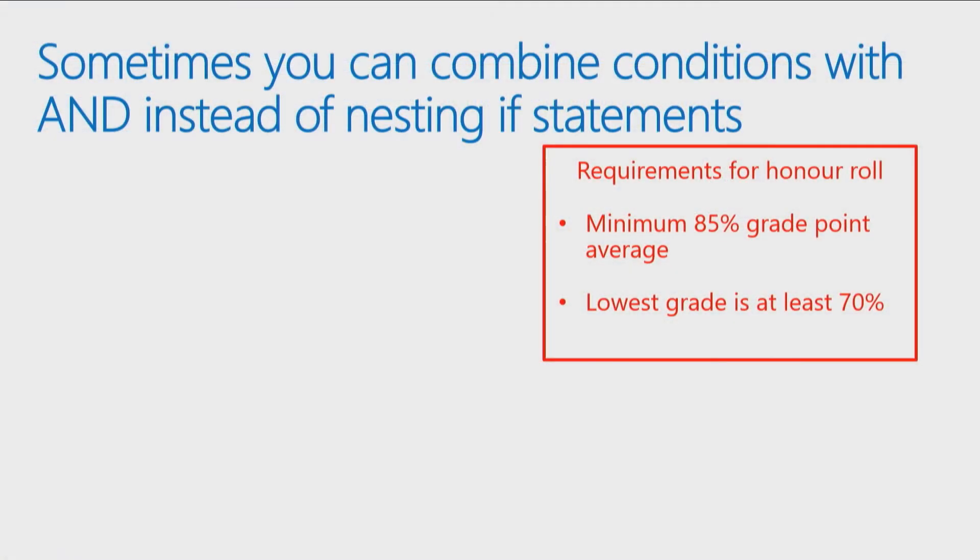Sometimes you can combine conditions with AND instead of nesting if statements. So I'm taking a different scenario this time. Let's say you've got a university or a college, and you're trying to calculate which students have made the honor roll. Typically making the honor roll or a dean's list or principal's list requires having a certain average, a grade point average of a certain level, but it might also have a requirement of maintaining all your grades above a certain level as well. So your lowest grade cannot be lower than 70 percent, and your overall average has to be 85 percent or higher.